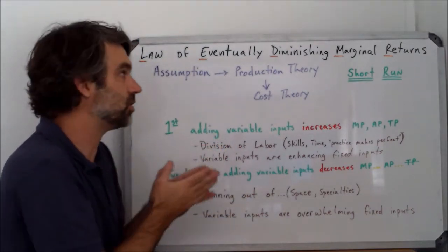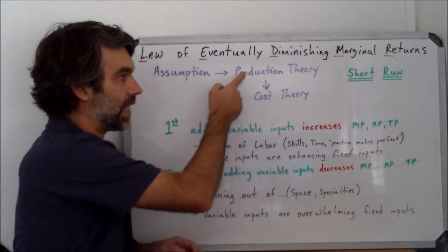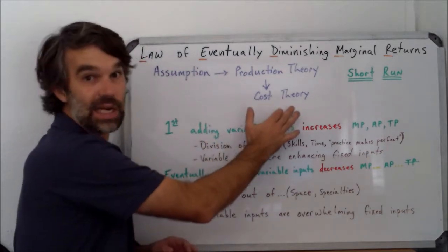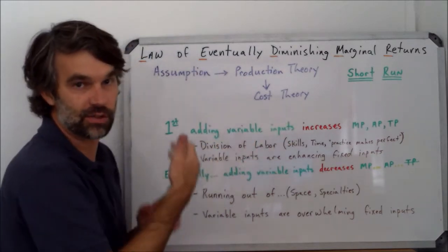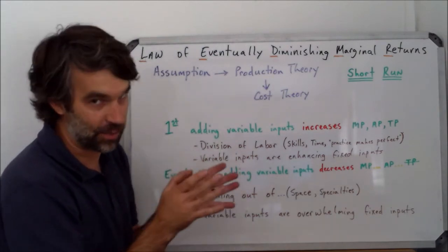There's no real different conclusions between production theory and cost theory, but we can't put production theory on the same graph with revenue, therefore we need cost theory so we can put it on the same graph to draw conclusions about profit. That will make more sense later, I promise.